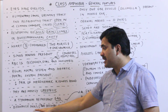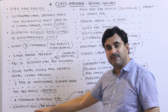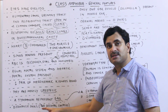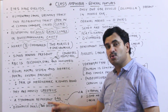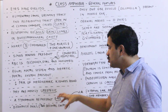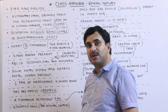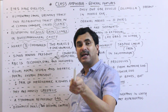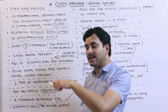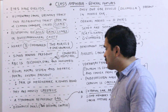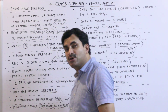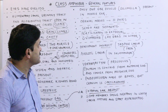The skull is dicondylic, meaning the skull bears two occipital condyles. 'Di' means two and 'condylic' refers to condyles, so two occipital condyles are present in the skull, and hence it is called a dicondylic skull.